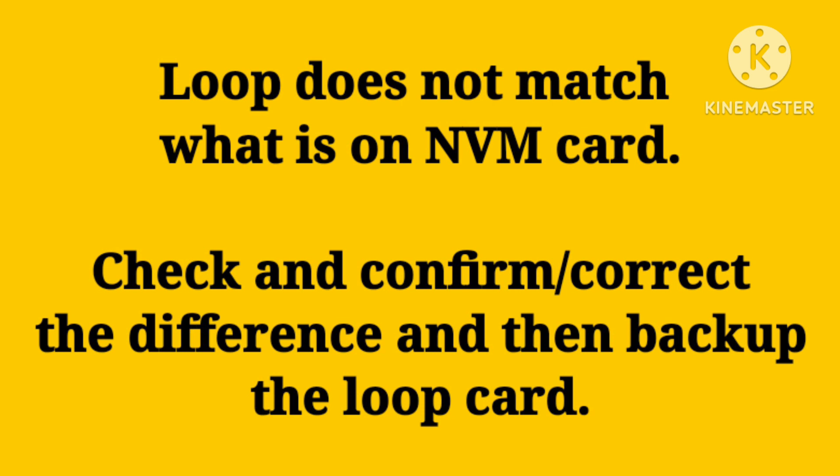Check and confirm or correct the difference, then back up the loop card. The troubleshooting for this fault is simply to back up the loop card, and it will be resolved. Also, if you get a 'loop stopped at card X' fault, it means that previous data was lost — possibly a cable or something on that part of the loop is bad.